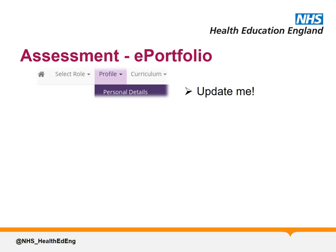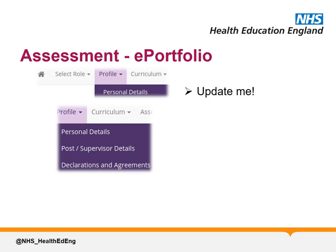Secondly, sign your declarations of probity and health and educational agreements under profile menu and declarations and agreements. These need to be signed off at the beginning of each year, ideally when you first log on to the ePortfolio. All doctors must have integrity and honesty and must take care of their own health and wellbeing so as not to put others at risk. This is clearly set out in good medical practice. You must, therefore, read the relevant sections of good medical practice before completing the self-declarations for health and probity.